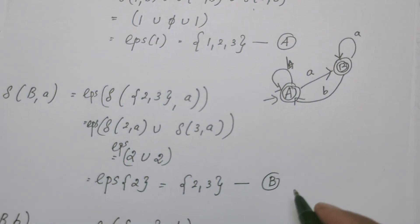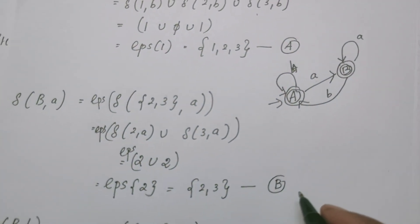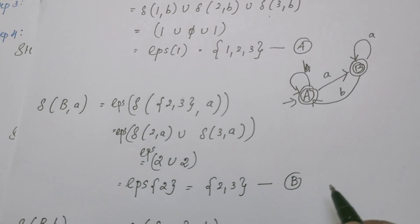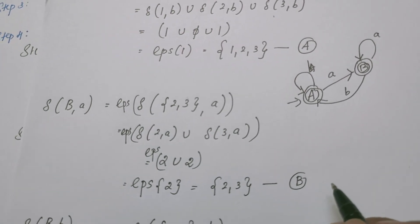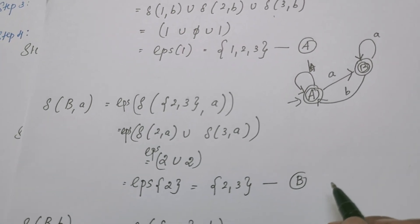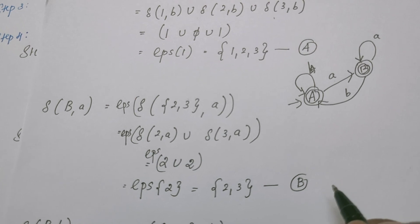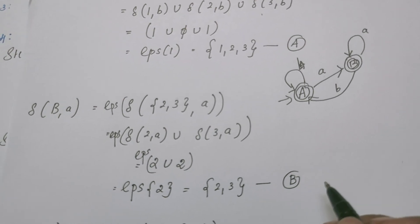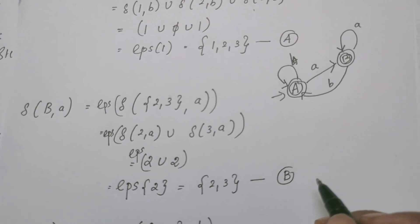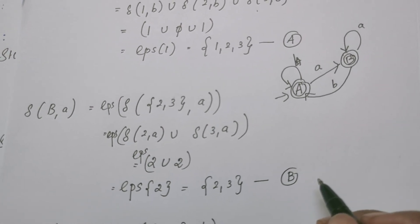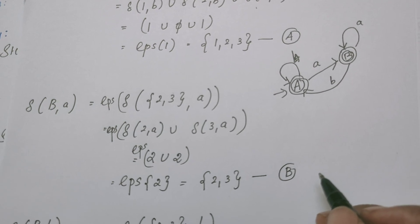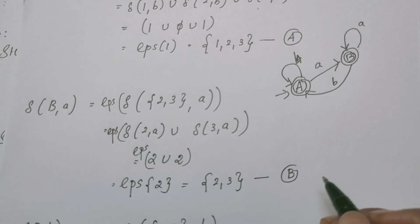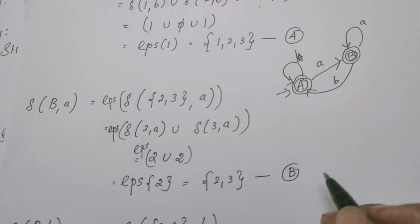This is how we convert an Epsilon NFSM to a DFSM. I hope you have understood. I will make another video with a different example of a similar problem. Thank you, students. Hope you liked it — please share the videos with your friends. Thank you.